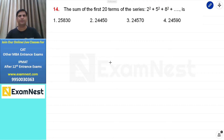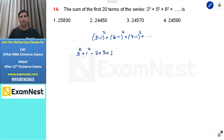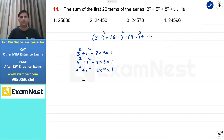यह question sequences and series पर based, एक moderate level का question है। हमें sum निकालना है first 20 terms का। 2 square को हम लिख सकते हैं 3 minus 1 square, 5 square को 6 minus 1 square, 8 square को 9 minus 1 square, and so on up to 20 terms। इन्हें open करें तो: 3 square plus 1 square minus 2 into 3 into 1, फिर 6 square plus 1 square minus 2 into 6 into 1, फिर 9 square plus 1 square minus 2 into 9 into 1, and so on।